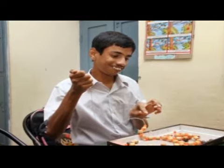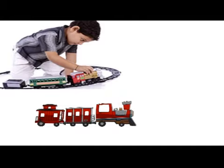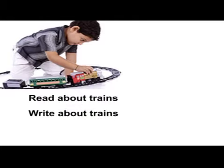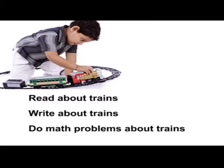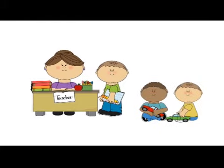Take advantage of student strengths and interests. Many students with autism have particular strengths and interests, and these should be taken advantage of in the classroom. For example, if a student demonstrates an interest in trains, the student should have opportunities to read about trains, write about trains, and do maths problems about trains. When teaching in an inclusion class, it is important to involve every child. Learning some simple tips for encouraging autistic students to participate can be helpful.